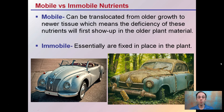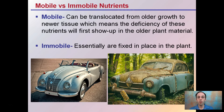We want to consider mobile versus immobile nutrients. Mobile nutrients can be translocated from older growth to newer growth tissue, meaning that deficiency of these nutrients will first show up in the older plant material — being taken from those older leaves and shifted to the newer growing leaves. Immobile nutrients are essentially fixed in place and don't translocate well, so newer growth will tend to show the first signs of deficiency.